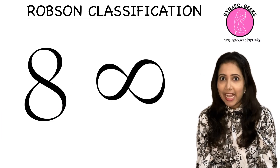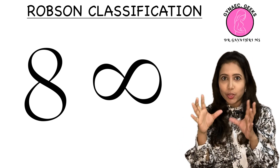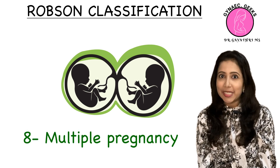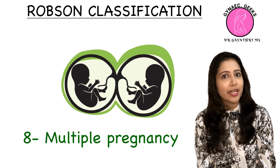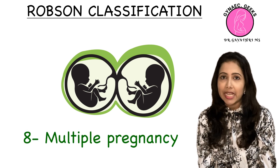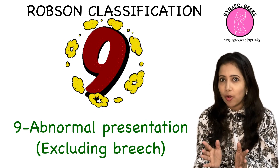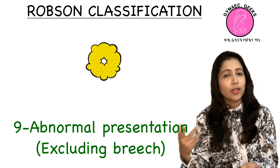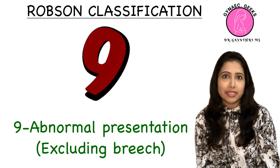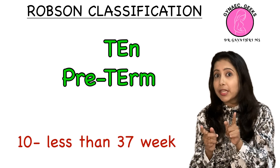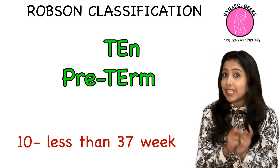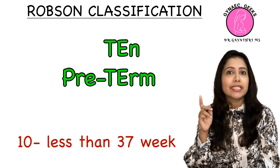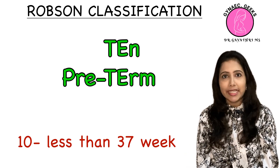Group 8: the numeral 8 has two sacs which can accommodate two babies, so Group 8 is for multiple pregnancies. Group 9 is for all abnormal presentations — transverse lie, oblique lie, or any other abnormal presentation. Group 10 covers all singleton pregnancies at less than 37 weeks gestation.